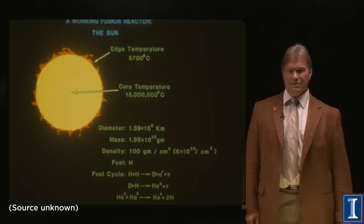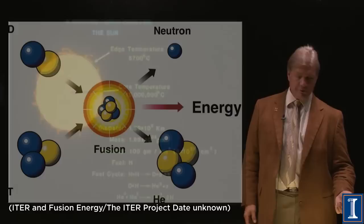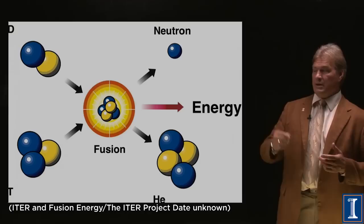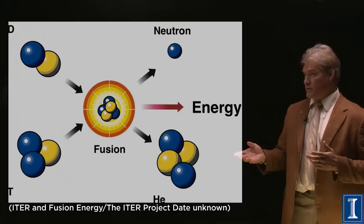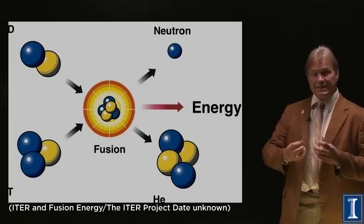What we want to do on Earth to make fusion is first use a much simpler reaction. Deuterium, an isotope of hydrogen, which has one proton, the yellow, and one neutron, the blue, with another isotope of hydrogen called tritium, which still has one proton and two neutrons. This is the easiest fusion reaction to take place.